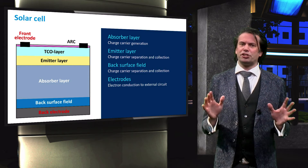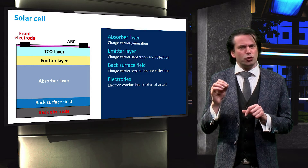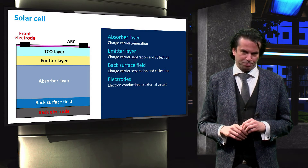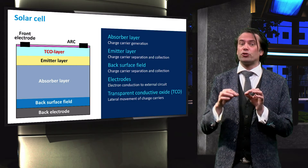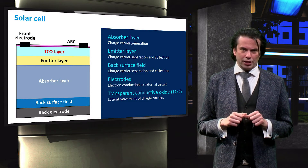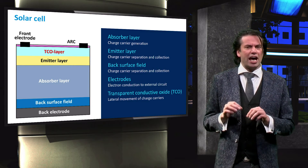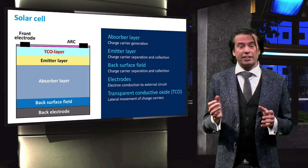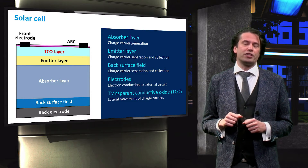For many PV technologies, however, the conductive properties of the emitter layer are too poor for good lateral transport. For these technologies, a transparent conductive oxide layer is introduced that is transparent to the incident light, and has excellent conductive properties to facilitate the lateral movement of charge carriers to the front electrode.